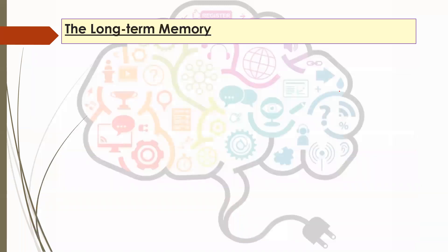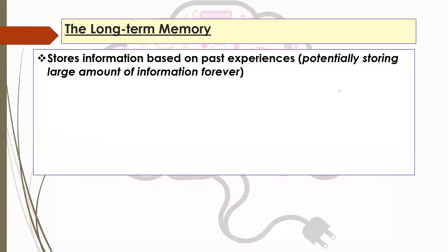Most questions are likely to be about the subsystems, but you also need to be aware of what role the long-term memory plays in this overall process. The long-term memory stores information based on past experiences and is potentially storing a large amount of information. Depending on how you engage with it, it could store this information for a very long time — arguably forever — depending on the regularity with which you use it and the impact it's had on your experiences. If it's something particularly significant, you're more likely to remember it.